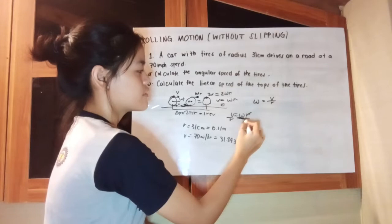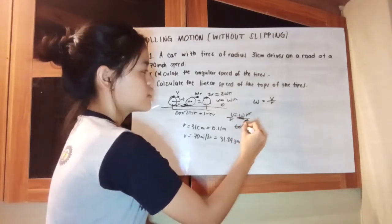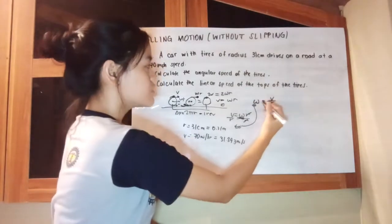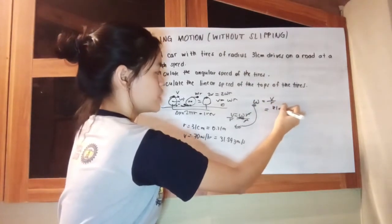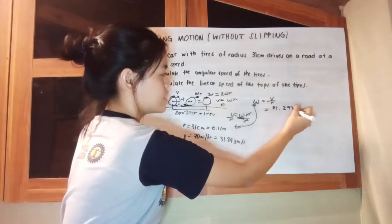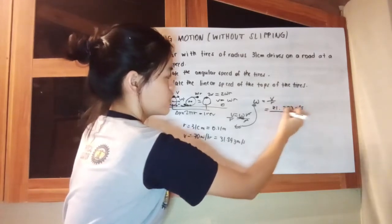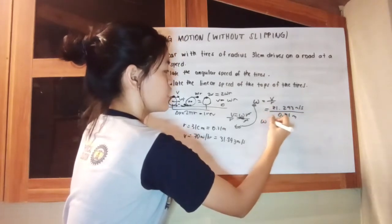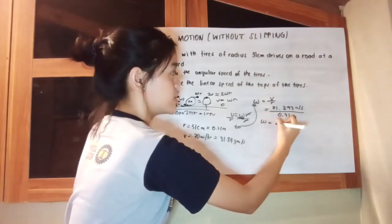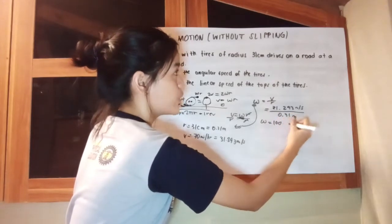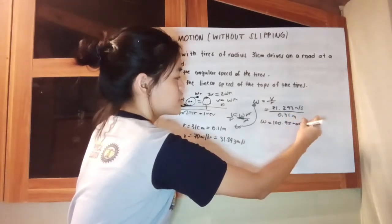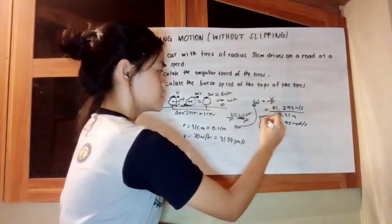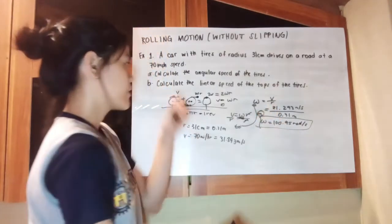We can cancel this and then we will end up with this equation. We are just going to substitute the values. We have 31.293 meters per second over 0.31 meters. Our angular speed is equivalent to 100.95 radians per second. This is for our first question.